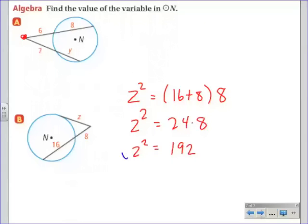We undo a squared with a square root. So when we square root both sides, we will see that Z equals roughly 13.9. That wraps up 12-4. Make sure you understand the difference between a secant line and a tangent line, and you can identify which theorem we're going to use in each case.